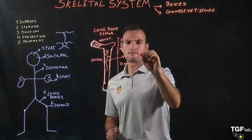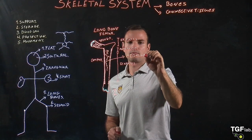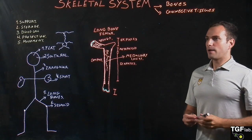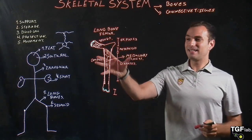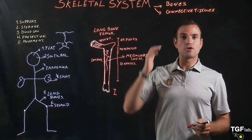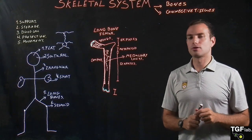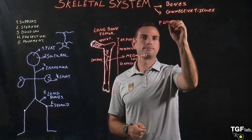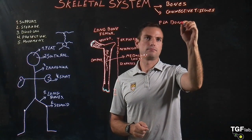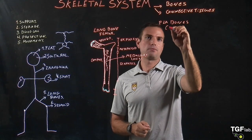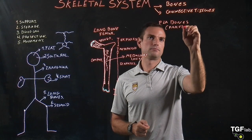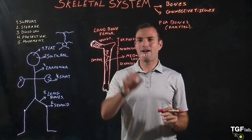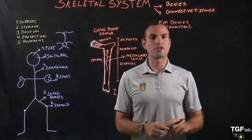This structure is very different in comparison to the flat bones — for example, the parietal bone in our skull. For flat bones like the parietal bone, the structure is very different: we don't have epiphysis, metaphysis, and diaphysis; instead, we have two different structures.